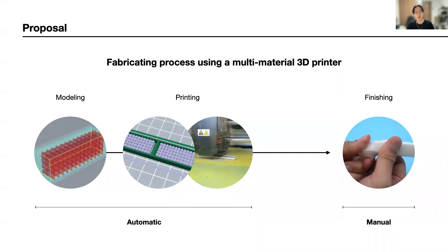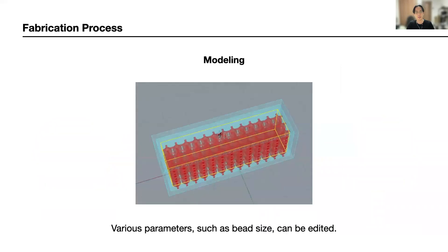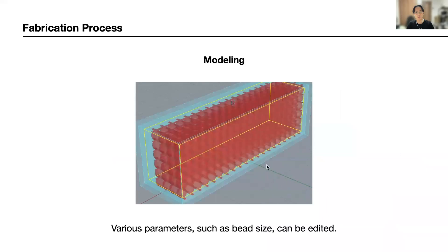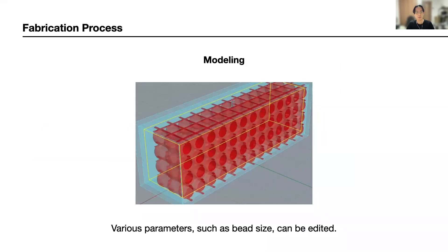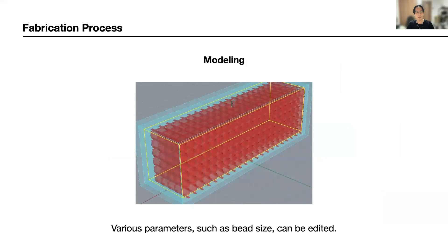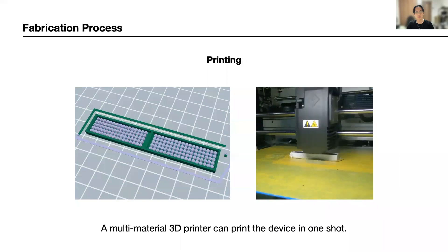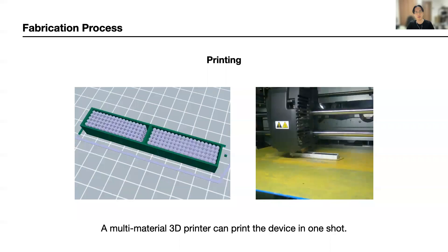Now let's take a look at the specific manufacturing process. In this study, the model is pre-designed using customized software made in 3D CAD with Rhino. By using the software, the user can edit the size of the beads and the device by adjusting the printing parameters. This time, we printed a prototype with two different rooms. Please refer to the paper for specific information about the parameters.